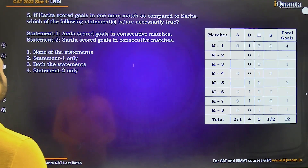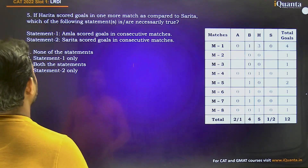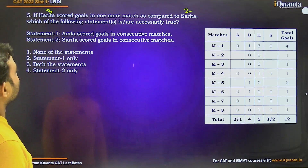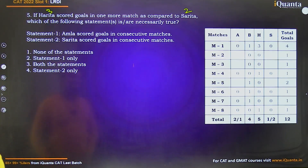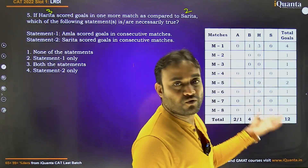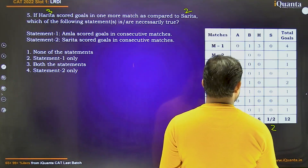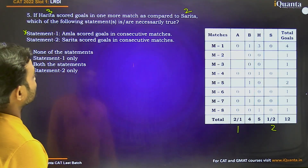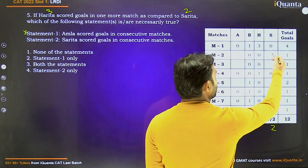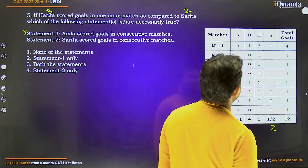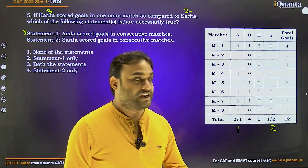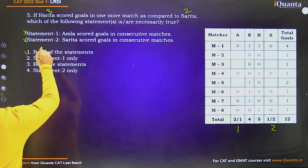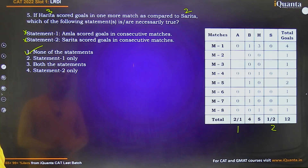Fifth question: If Harita scored goals in 1 more match than Sarita, and Harita scored in 3 matches, then Sarita scored in 2 matches. Which statements are not necessarily true? Statement 1: Amla scored goals in consecutive matches. Since Sarita scored 2 goals, Amla scored 1 goal in only 1 match — consecutive is not applicable. So this statement is false. Statement 2: Sarita scored goals in consecutive matches. Sarita can score in any 2 of matches 2, 3, and 5, which are not necessarily consecutive. So this is also not necessarily true. Answer is option 1 — none of the statements are necessarily true.